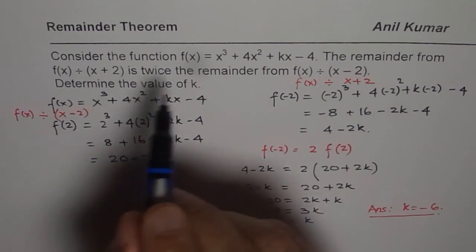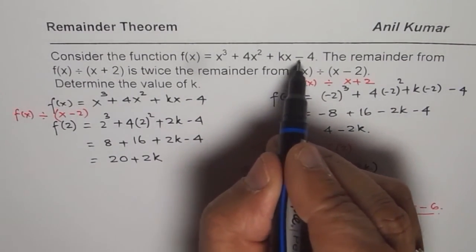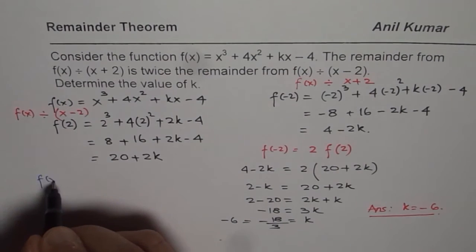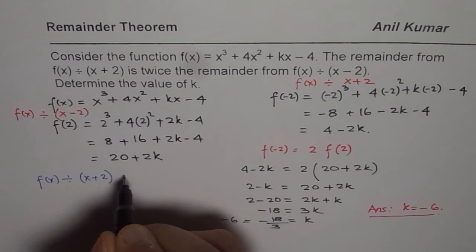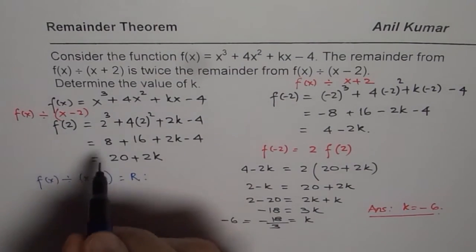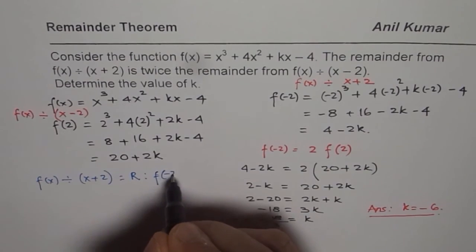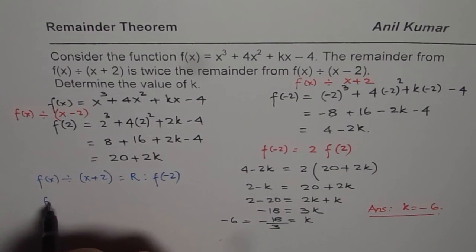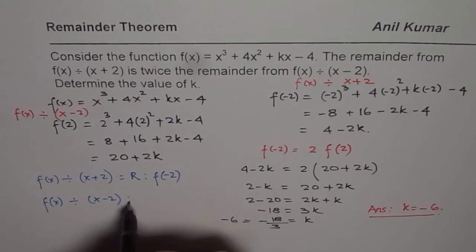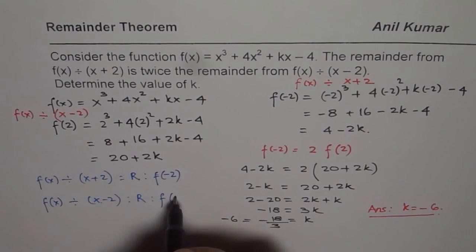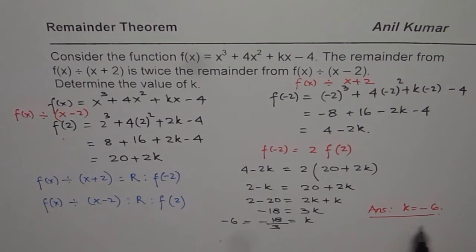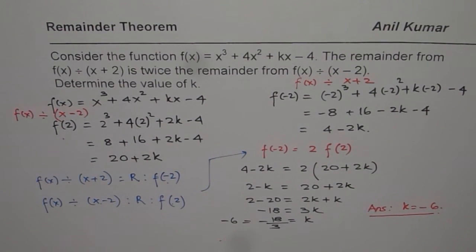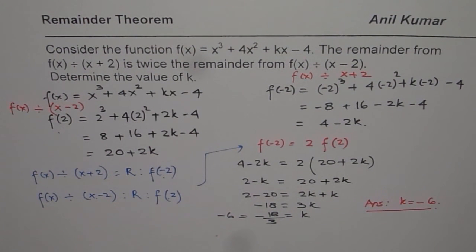Let us go through it once again. The function given to us is x cubed plus 4x squared plus kx minus 4. When you divide f(x) by x plus 2, the remainder is the value of the function at x equals minus 2. And this remainder is 2 times the remainder when you divide f(x) by x minus 2, which is f of plus 2. Equating this remainder as 2 times the other, you solve for k and get the answer k equals minus 6. I hope it is absolutely clear. Thank you.